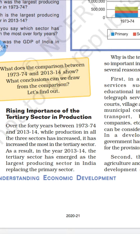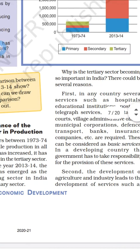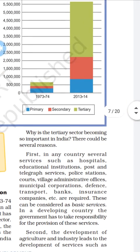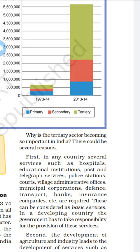Over the 40 years between 1973-74 and 2013-14, production in all three sectors has increased. However, the most significant increase has been in the third sector — that is, the tertiary sector. The tertiary sector has given much larger production in India, even replacing the primary sector in terms of contribution.